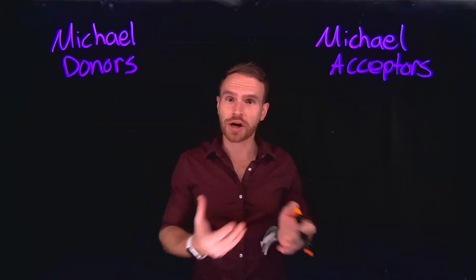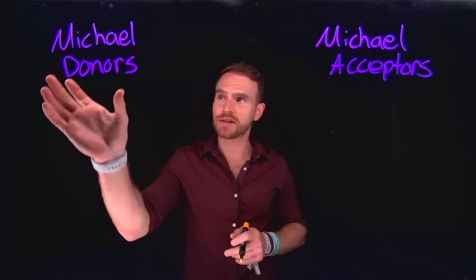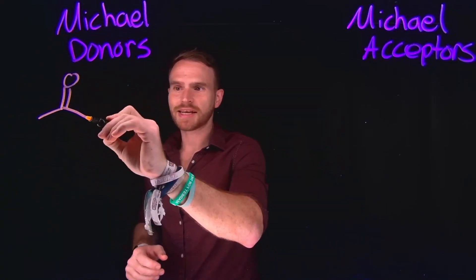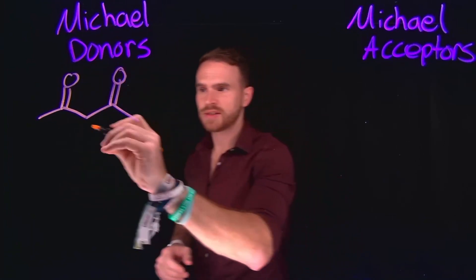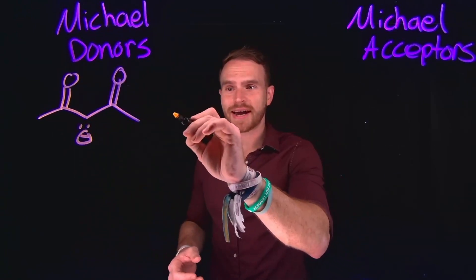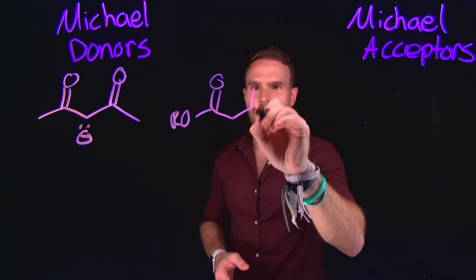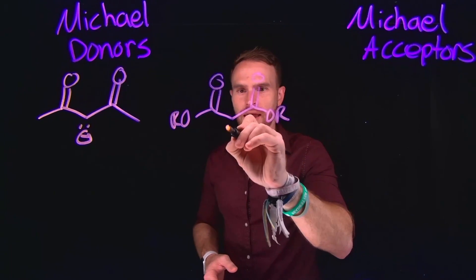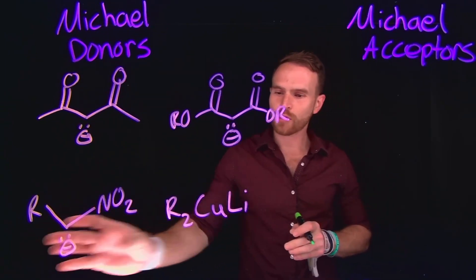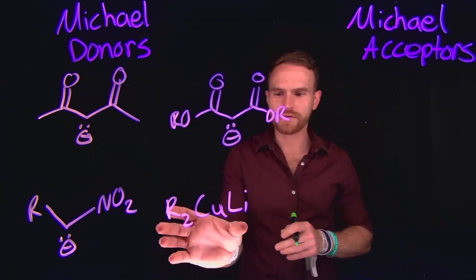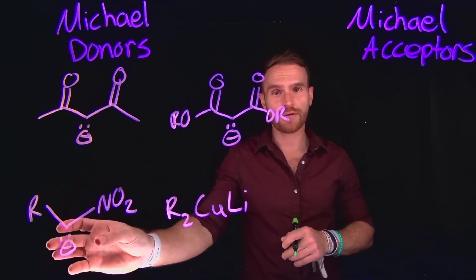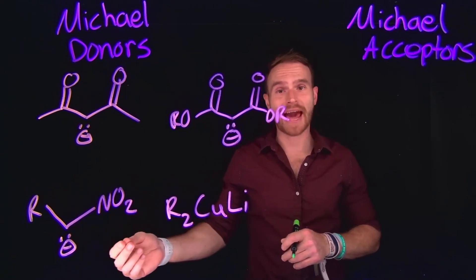Now, in order to discern whether or not a Michael addition or a conjugate addition is going to occur, it's important to be able to identify Michael donors and Michael acceptors. A Michael donor is oftentimes going to be a type of compound that has a very acidic alpha carbon. For example, in a diketone species, we can very easily deprotonate the alpha carbon position because it has been made so acidic. Similarly, a diester species will also allow for the deprotonation of that alpha carbon, allowing us to generate a very strong Michael donor. We call it the donor because that is the nucleophile in our Michael addition reaction.